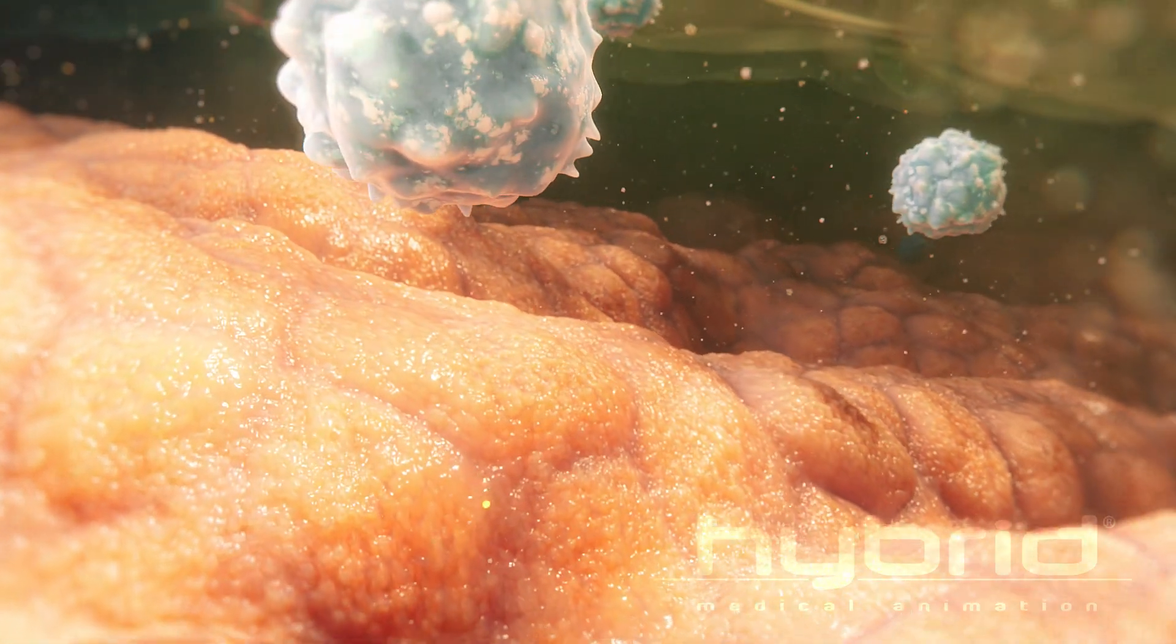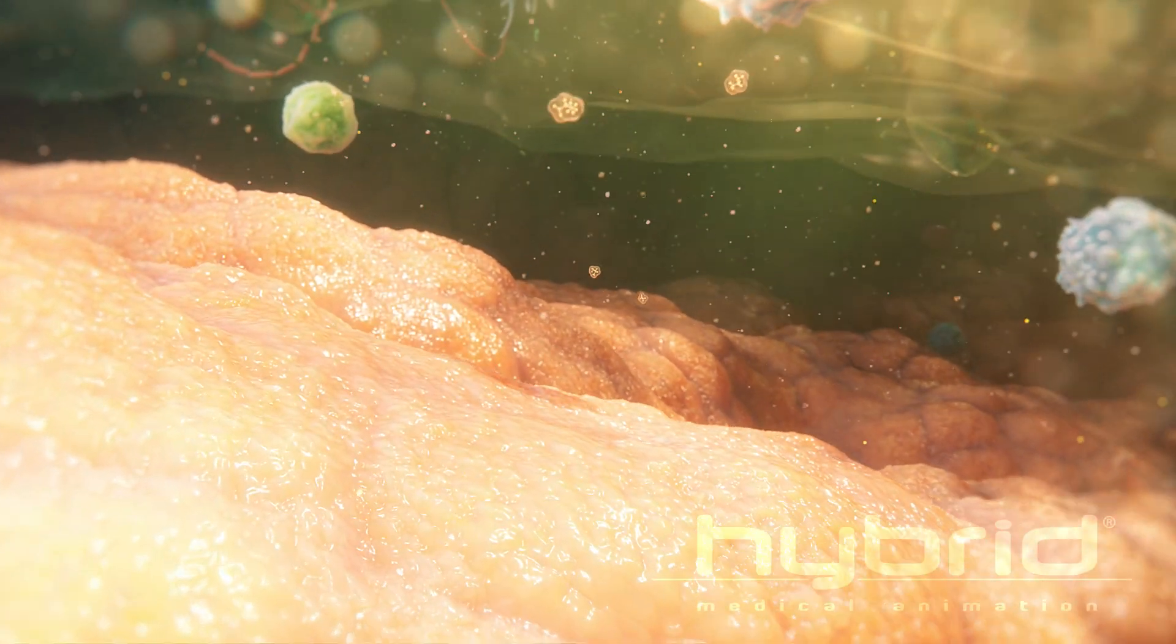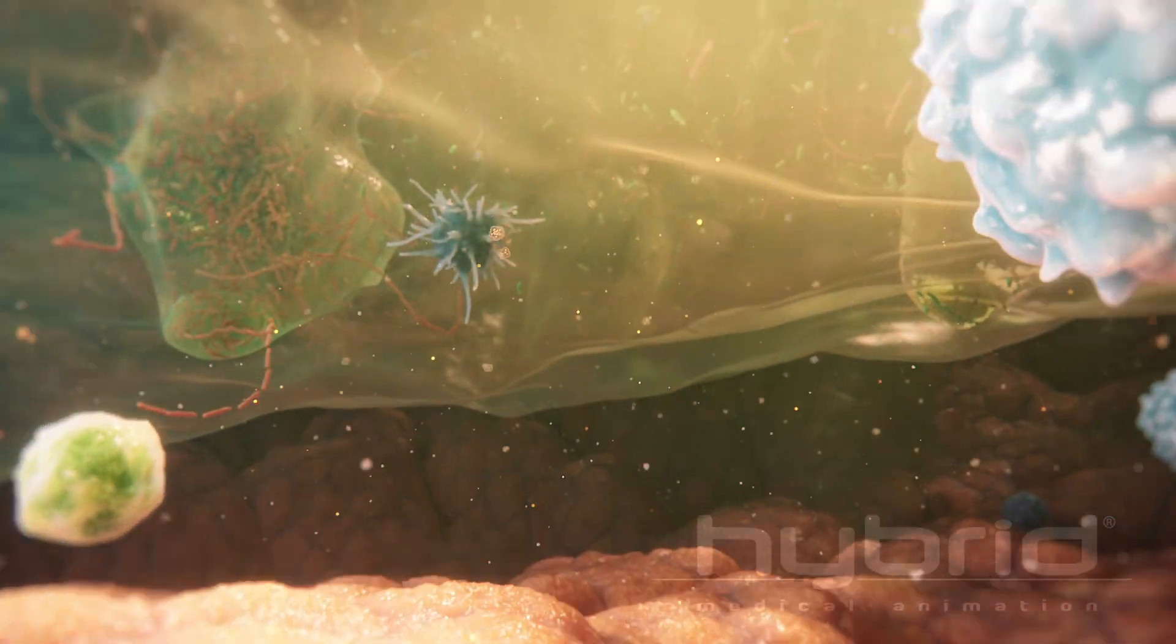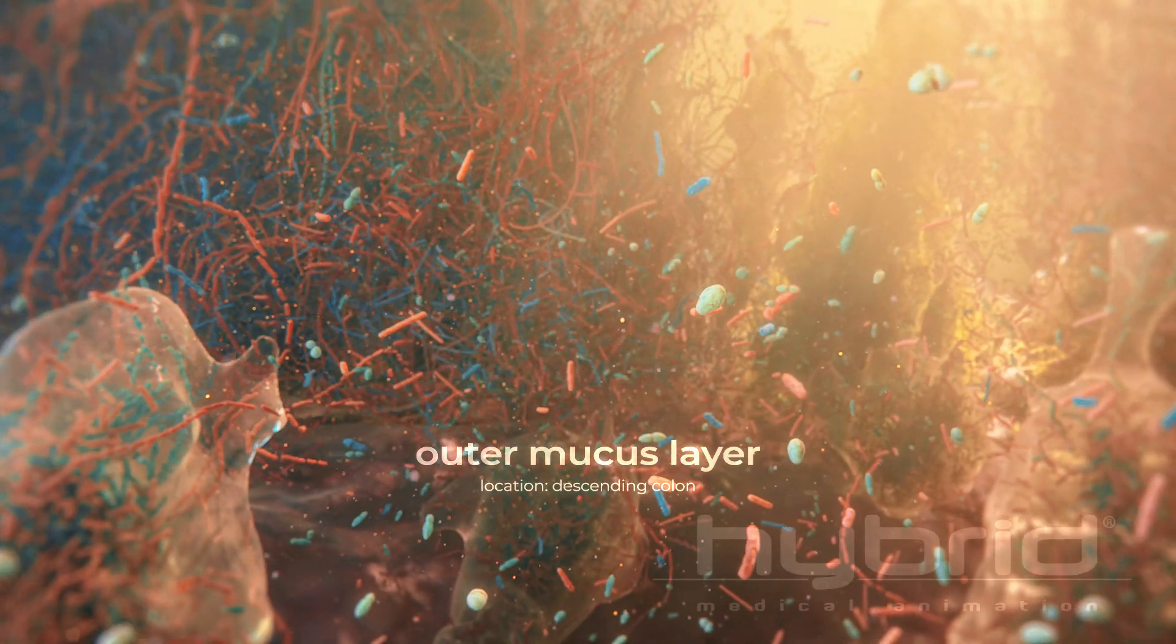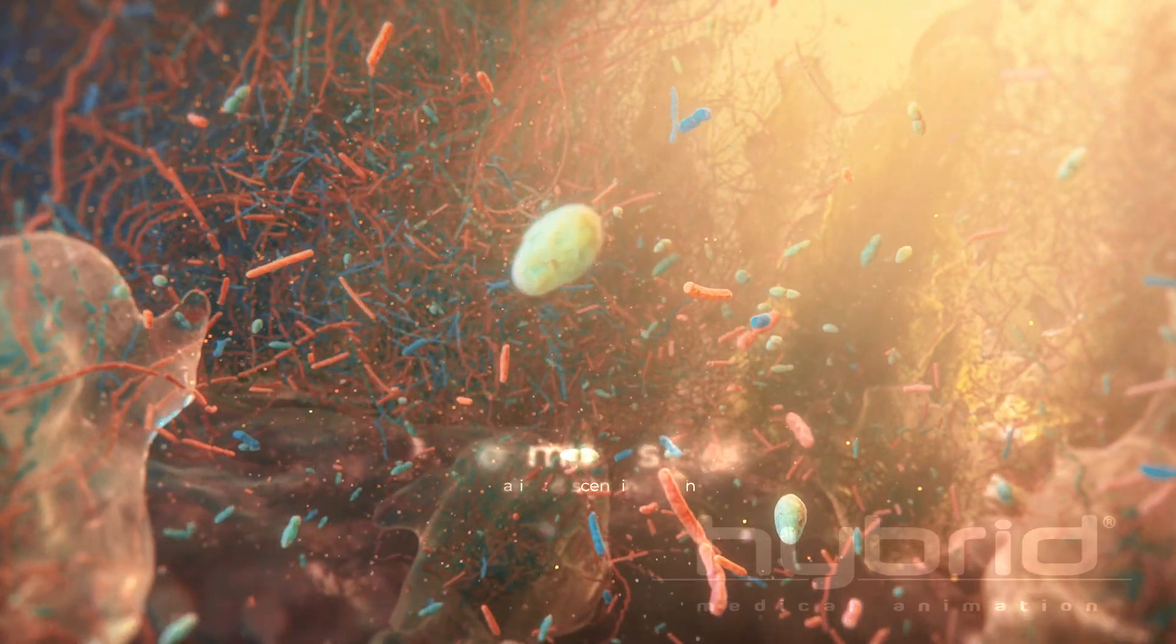While the inner mucus layer serves as the primary defense barrier against microbial interaction with the colon, it is here in the permeable outer mucus layer where a habitat for microbial colonization and interaction thrives.